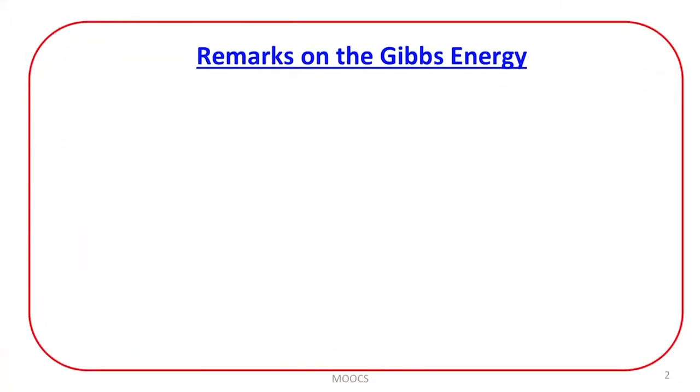Let us discuss about Gibbs energy today, which is also called free energy. The reason for the word 'free' we have discussed in the previous lecture. Gibbs energy and the corresponding changes in Gibbs energy when a process takes place at constant temperature and pressure is very important to understand, because the change in Gibbs free energy at constant temperature and pressure, if it is less than 0, then the process is spontaneous. That is one of the criteria of spontaneity that we discussed in the previous lecture.